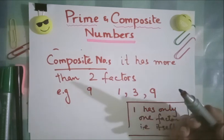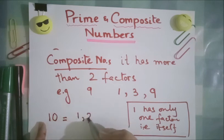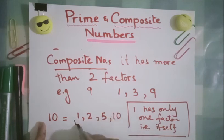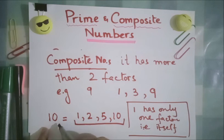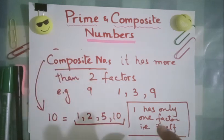two factors. So it can be like your 10. Like that, 10 has factors 1, 2, 5, and then 10. So these four numbers can divide this 10, so it is also our composite number. Thank you so much, Allah Hafiz.